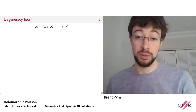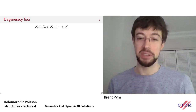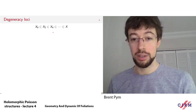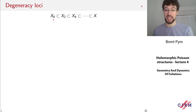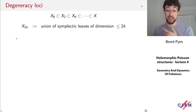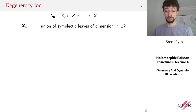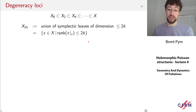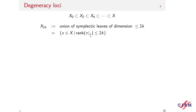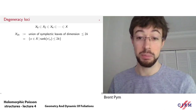For this reason, it's useful to consider how the leaves can have different dimensions throughout X. We introduce an increasing sequence of closed subspaces indexed by even integers X_0, X_2, X_4, up to X. The space X_{2K} is the union of all symplectic leaves whose dimension is at most 2K, equivalently the collection of all points where the rank of the bivector is at most 2K — since the rank of the bivector exactly indicates the dimension of the symplectic leaf through that point.